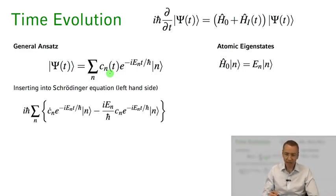So let's do that. Let's plug this in on the left hand side. On the left hand side we of course get two time derivatives: one for the term cn of t here and a derivative for the exponential term. This is written down here, this is the first time derivative and the second time derivative of the exponential function.